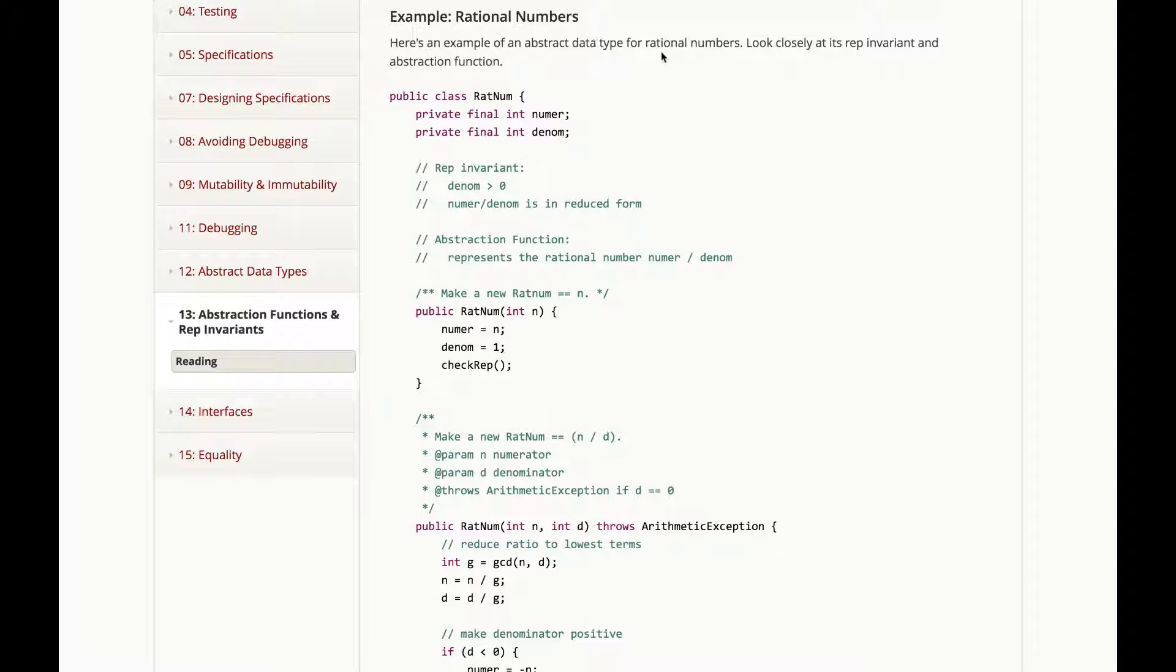Here's an example of an abstract data type for rational numbers. Let's look closely at its rep invariant and its abstraction function.